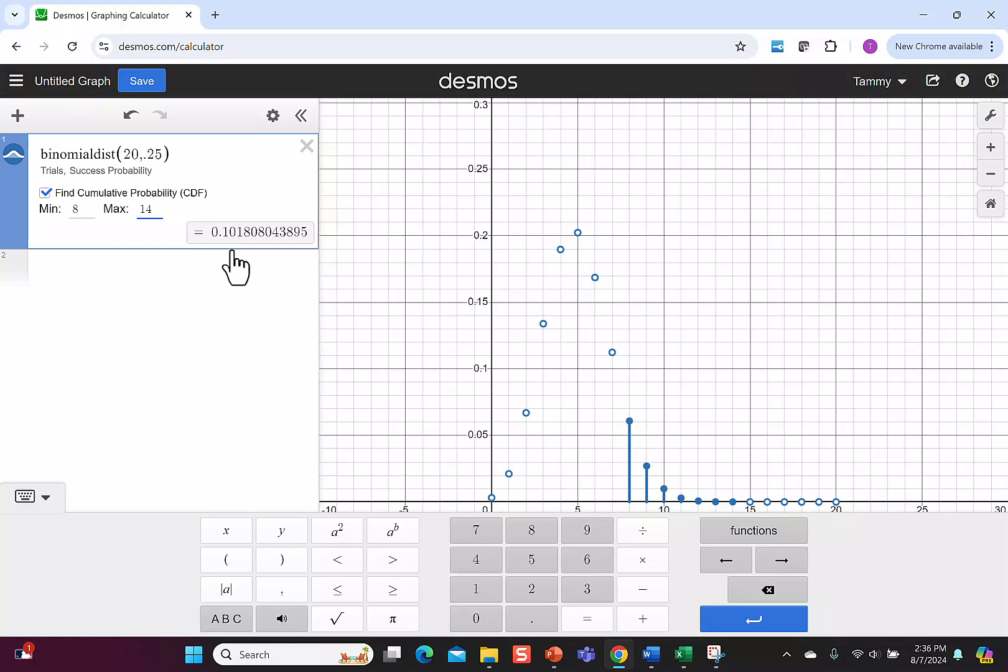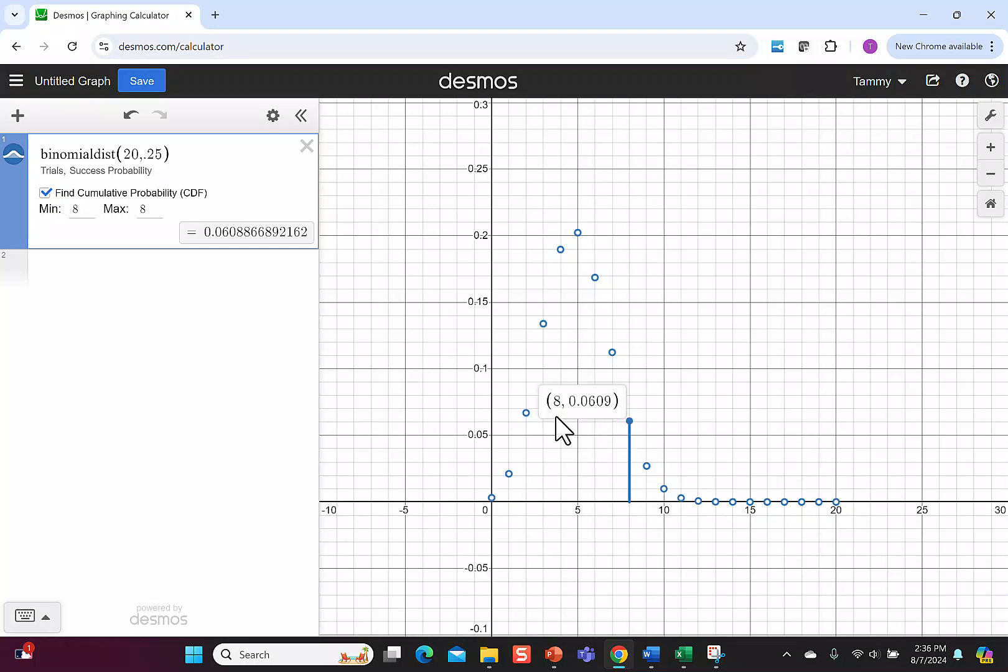If you wanted to know an individual value, like the probability of getting exactly 8 right, you can put 8 to 8. You can also click on the number. The first number tells us the number that are correct, which is 8, and then the 0.0609 as the probability, just like we saw when we put it in as the min and the max.